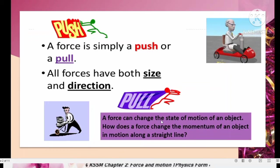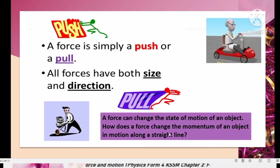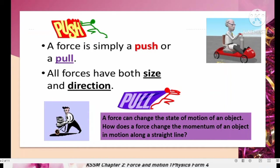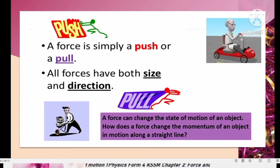A force can change the state of motion of an object. How does a force change the momentum of an object in motion along a straight line? We discussed earlier that momentum is a product of mass and velocity. So how can the force applied change the momentum of an object? We will discuss more on this topic.